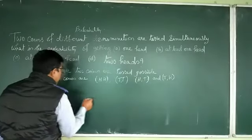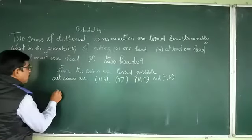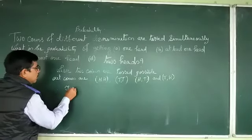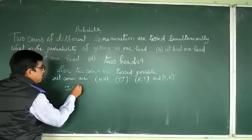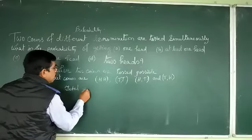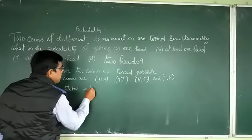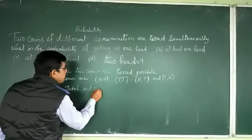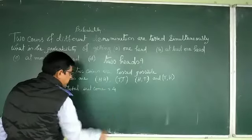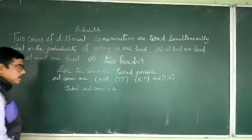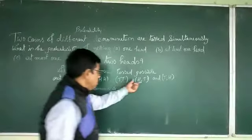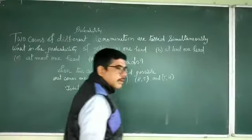Therefore, the total number of outcomes is four — one, two, three, four.